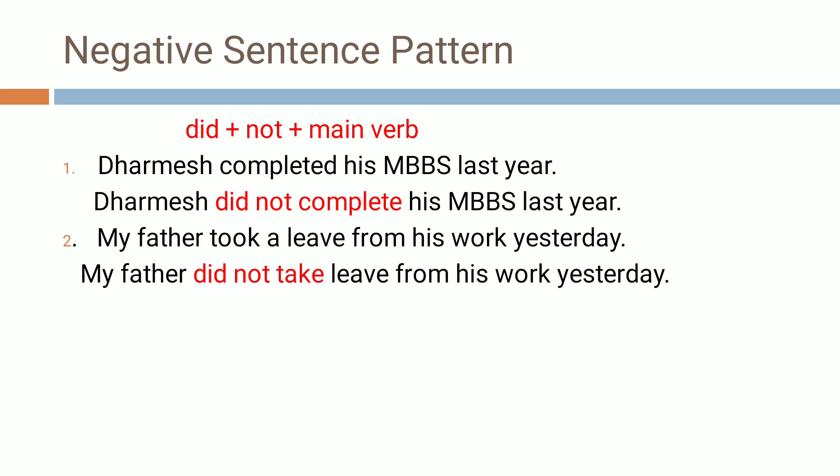Second example: 'My father took a leave from his work yesterday.' Look at the verb — 'took' is an irregular verb, because 'ed' is not used. And the timing word is 'yesterday'. Now let's make it negative: 'My father did not' — the simple form of 'took' is 'take' — 'did not take leave from his work yesterday.' This way, negative sentence formation of past tense is very easy.